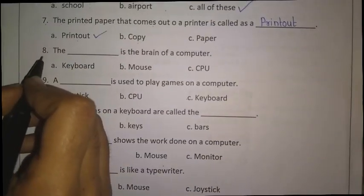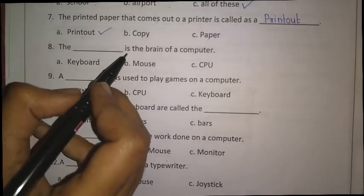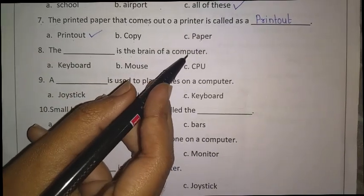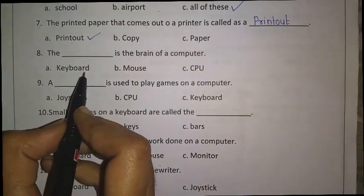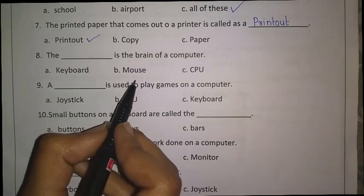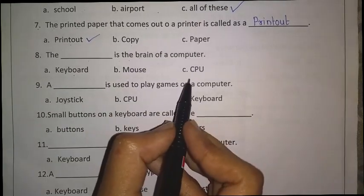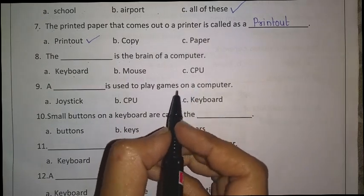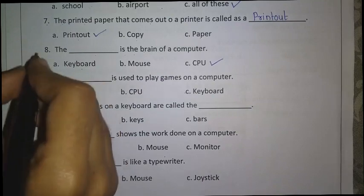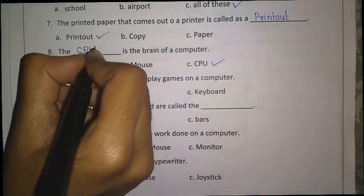Now eighth question: The dash is the brain of a computer — which is the brain of a computer? A keyboard? No. A mouse? No. Then a CPU? Yes. So give a tick over here. Very good! Let's write here: C-P-U.